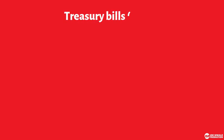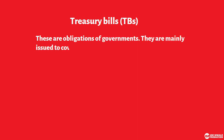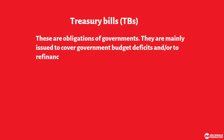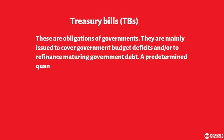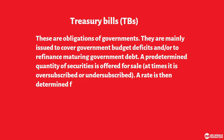We're going to start with treasury bills. These are obligations of the government, mainly issued to cover government budget deficit or to refinance maturing government debt. A predetermined quantity of securities is offered for sale, and at times it is oversubscribed or undersubscribed. A rate is then determined for the treasury bills.